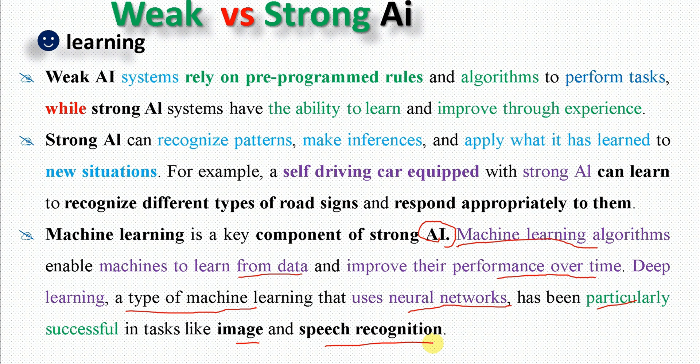Using deep learning, a system can recognize, understand, and interpret images — for example, identifying a human body. It can also recognize, understand, and classify visual content with high capacity.